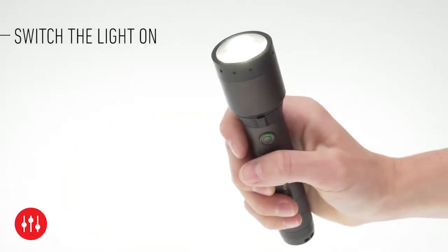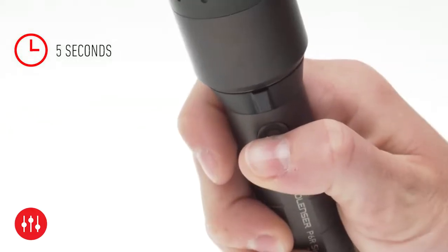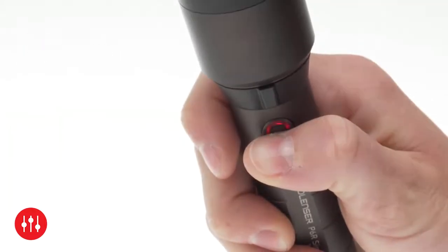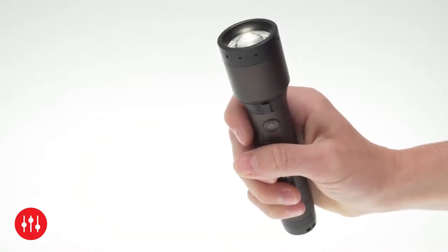Switch the light on. Now press and hold the switch for 5 seconds until it flashes red once. From now on, you are in personalization mode.